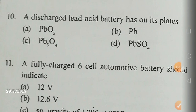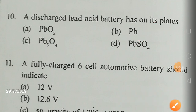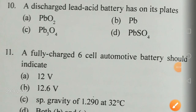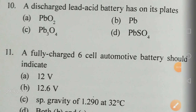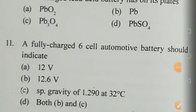A discharged lead acid battery has on its plates — is it PbO2, Pb, Pb3O4, or PbSO4? It is going to have PbSO4, lead sulfate. This is the result of the discharge of the lead acid battery — it is deposited on the plates.